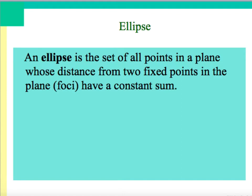The analytic definition of an ellipse is a set of all points in a plane whose distance from two fixed points in the plane, which are known as foci, have a constant sum.